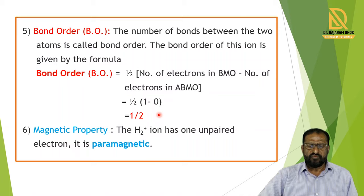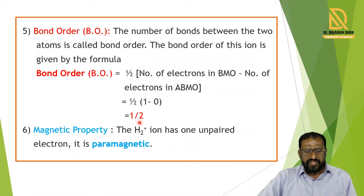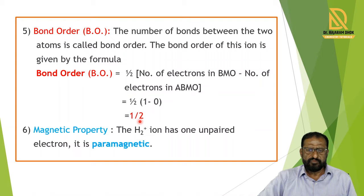A bond order of one half means that in H2 plus Ion, half a bond — or half a sigma bond — is present. Half sigma bond means its strength is half that of a general sigma bond. So 50% strength is present in this H2 plus Ion bond, making it less stable than the H2 molecule, with half the bond order.